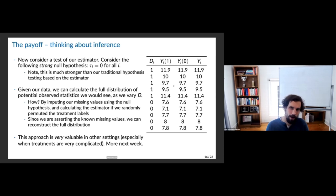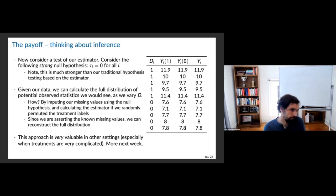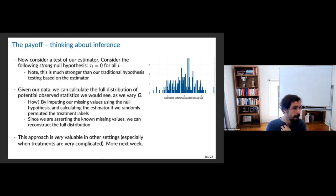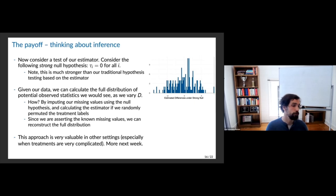In this dataset, I took 10 observations, imputed under the strong null, constructed the true treatment effect — which was large, something like four — then randomly permuted the labels and each time constructed that estimate. The resulting distribution is centered around zero, and the true estimate is at the far end. We've made no distributional assumptions but generated a way to construct p-values for this strong hypothesis test. You don't even need to enumerate every possible value under omega — a random sample of permutations will approximate the distribution. This was Fisher's big insight for using this approach for testing.